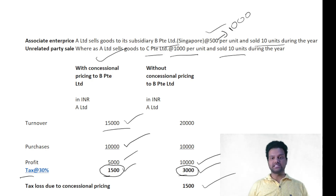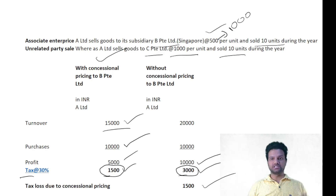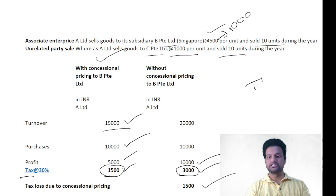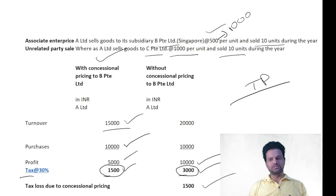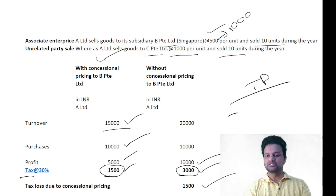What are those three transfer pricing conditions? The first one: when I'm saying A Limited, BPT, CPT — are these domestic or international transactions? This is an international transaction happening outside India, where goods are transferred to outside India. So condition number one is that there should be an international transaction.